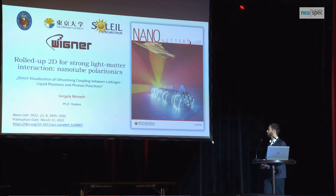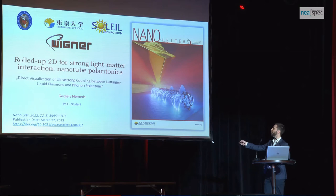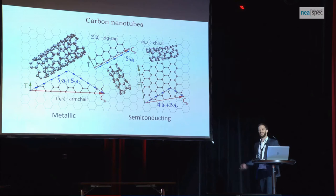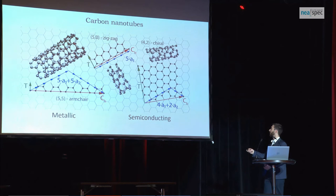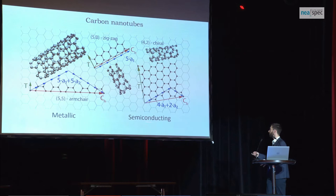One might notice that carbon nanotube is a 1D structure, but this is a 2D material session, so that's why I tricked my title a little bit. They were already introduced by William — you know that we can cut out different pieces from the graphene lattice, roll them up to a cylinder, and get different species of carbon nanotubes. The most interesting property is that they can show metallic and also semiconducting behavior.